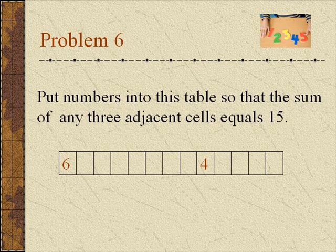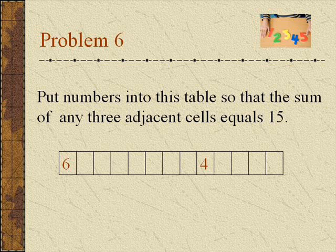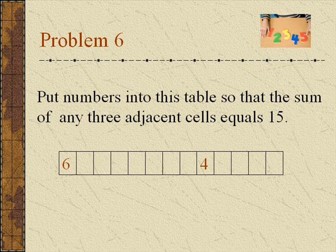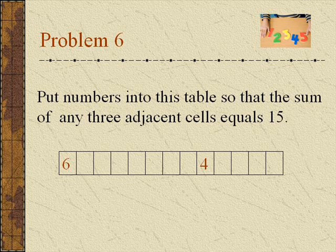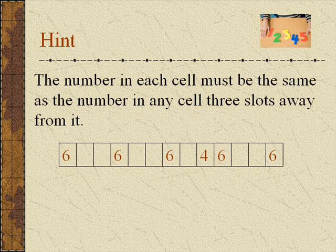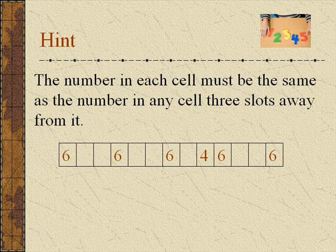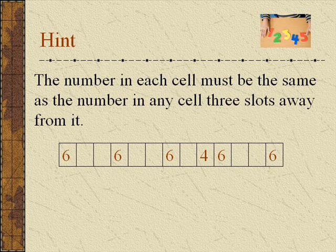Problem 6. Put numbers into this table so that the sum of any three adjacent cells equals 15. Sounds tough. Here's a hint: the number in each cell must be the same as the number in any cell three slots away from it. Can you see why?